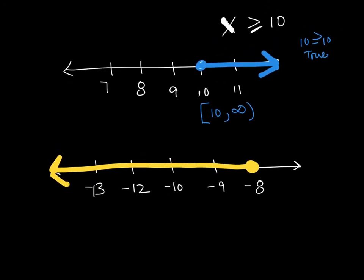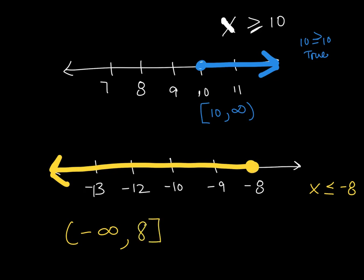The last one for this lesson — same idea. This time I'm going from negative 8 going less than, so all x values here would be true. Turning that into an inequality: x is less than or equal to negative 8. Notice how the direction of the arrow and the direction of the inequality sign are always the same. For interval notation, go from smallest to largest: negative infinity gets a parenthesis, then going up to negative 8 — and because 8 is included, negative 8 gets a bracket: (-∞, -8].